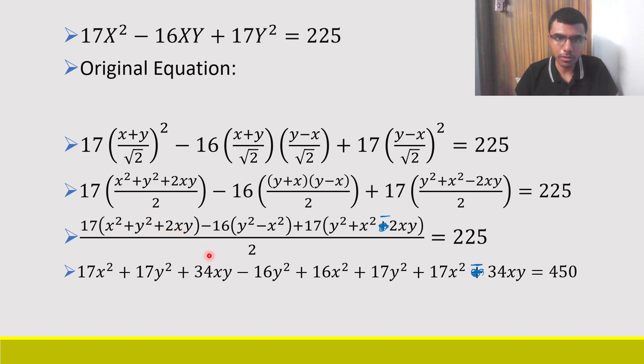17x² + 17y² + 34xy - 16y² and -16 times -x² is going to be +16x², and -34xy. Now 34xy and -34xy would get canceled. Now here what we are left with: 17x² + 16x² + 17x². 17 + 16 is 33, 33 + 17 is 50. So ultimately I am left with 50x².